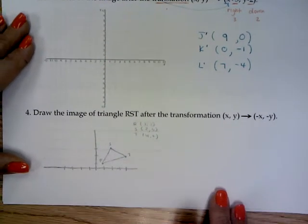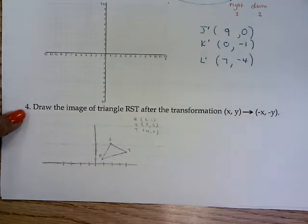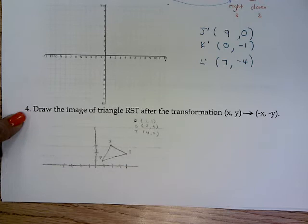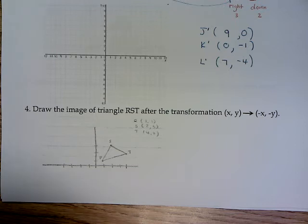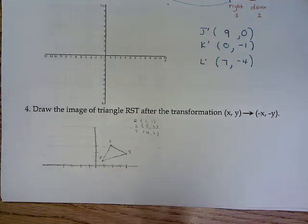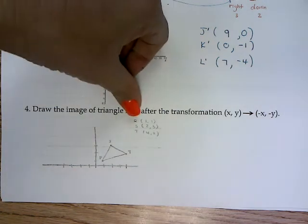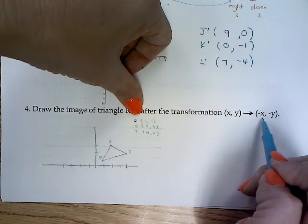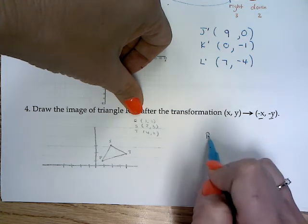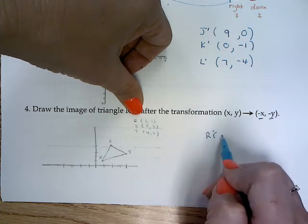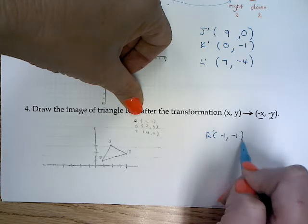Number four does ask me to draw the image of the triangle after the tessellation. So this case, I do have to draw my image and I do again need to make sure that when I draw my image, that I draw, I have my primes on my image. So my first point is R. It says I want negative X and negative Y. So R prime would then be negative one, negative one.